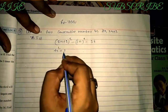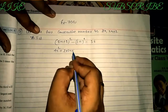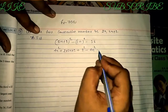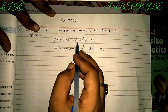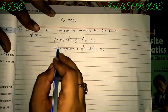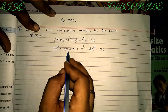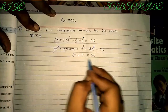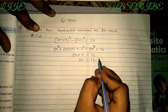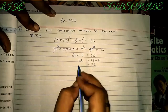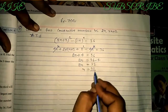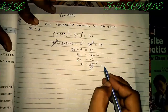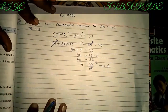Now solve it using the identity for (a + b)²: this will be 4x² + 4·2·x + 4 − 4x² = 36. The 4x² terms cancel, leaving 8x + 4 = 36, so 8x = 32, and x = 32 ÷ 8 = 4.